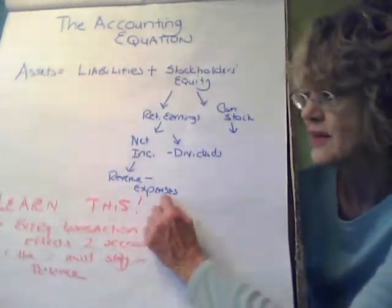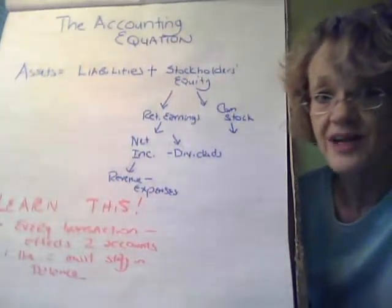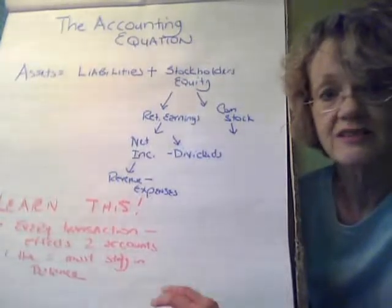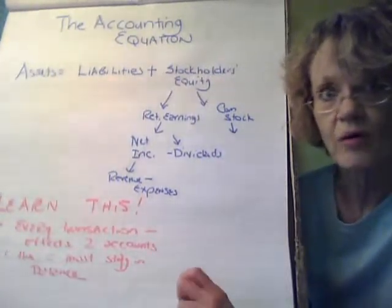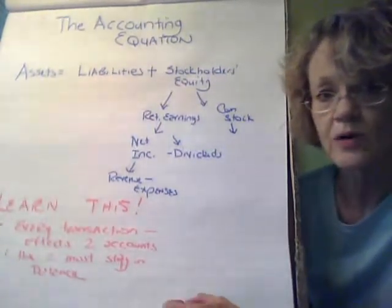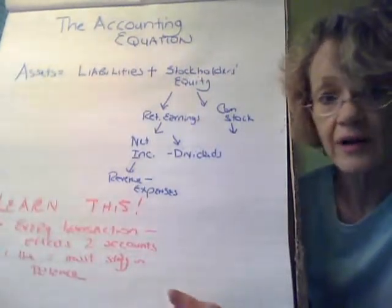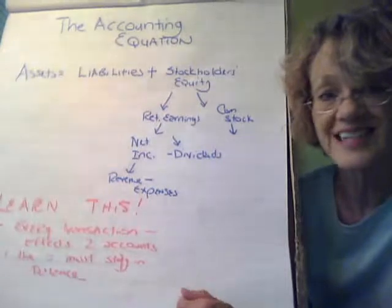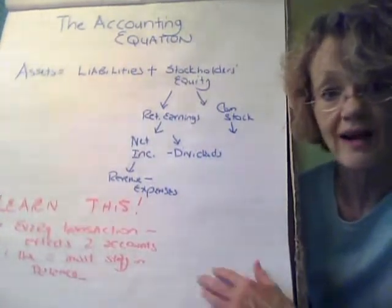So learn this equation and learn that every transaction we do, whether we sell something or buy something, it takes two accounts. Account is that term for cash or accounts receivable or revenue. So there's no account called asset. There's no account called liability. There are always a specific account because we're trying to define this.